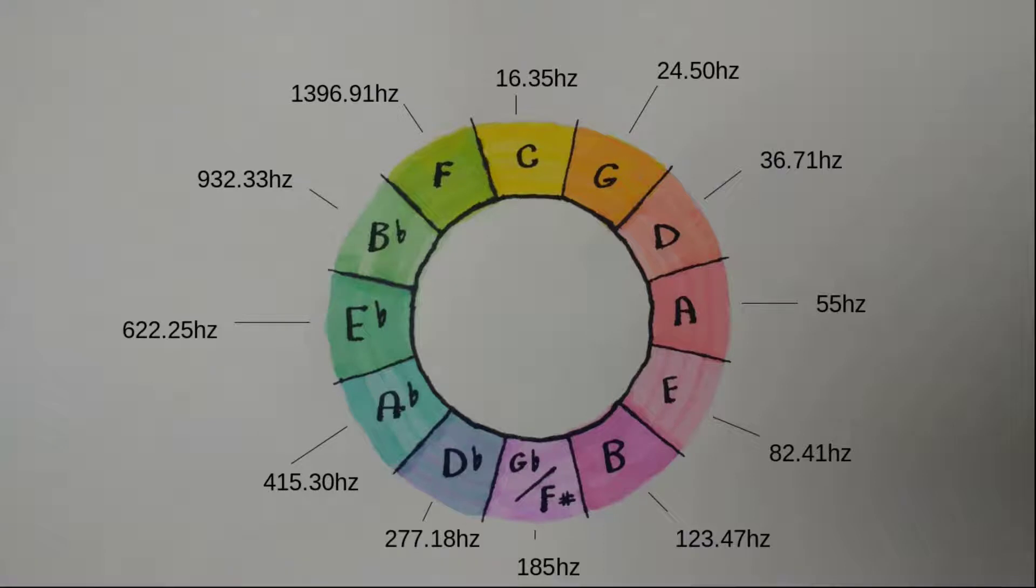There's just one problem. If we imagine that C is at 0 degrees on our circle and G is at 30 degrees, then we can say that 30 degrees of change equals around 8 hertz. But if we look at the difference between B-flat and F, which is also 30 degrees of change, then we have over 400 difference of hertz. And this isn't even using just intonation.